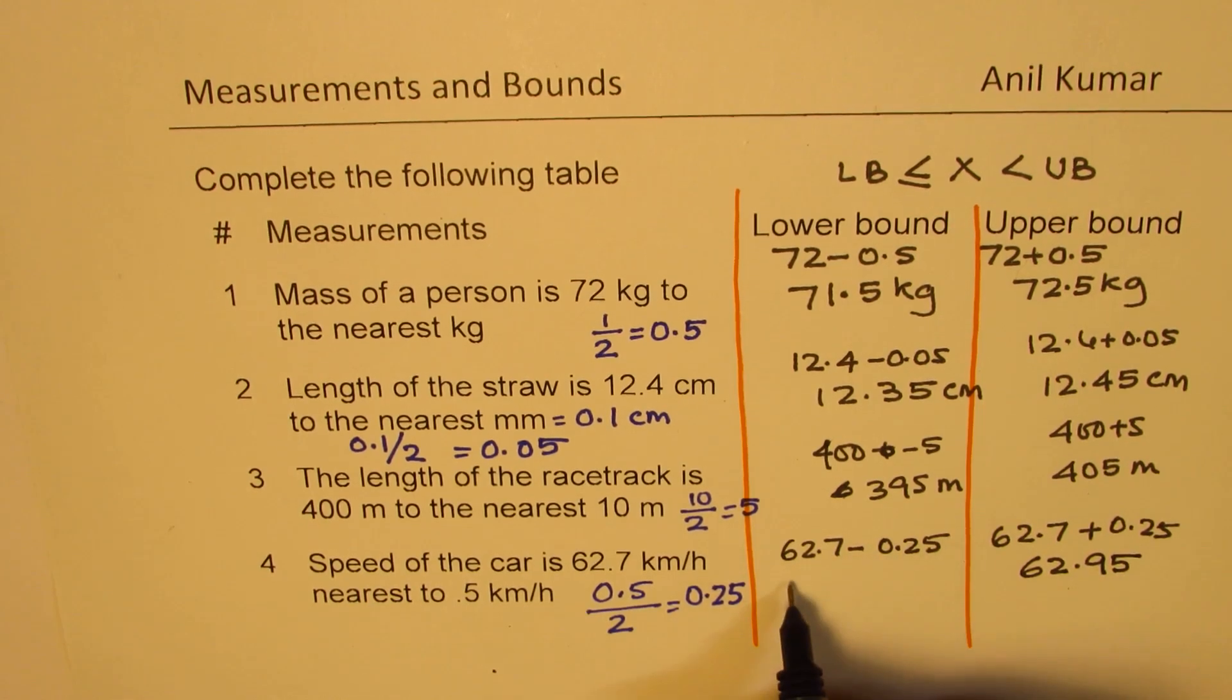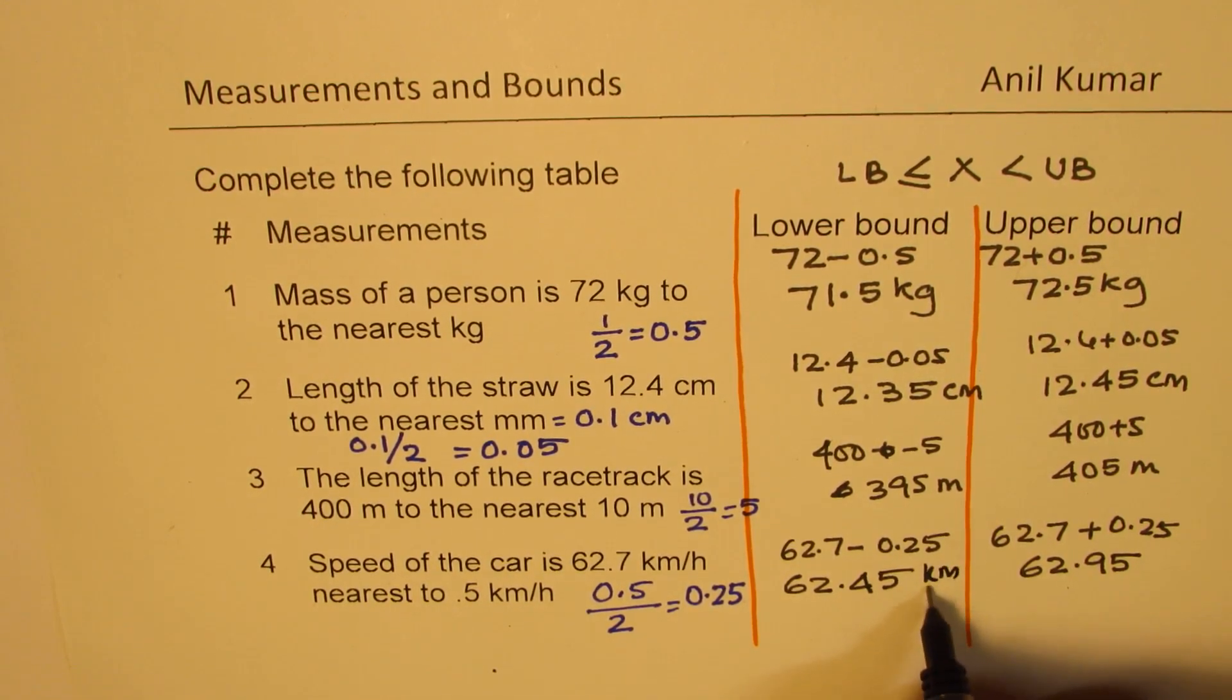And when you subtract, we get 62... So you borrow 1 from 7 becomes 6, right? So 6 take away 2 is 4, so 4, 5. And the units will be kilometers per hour. Is that clear to you?